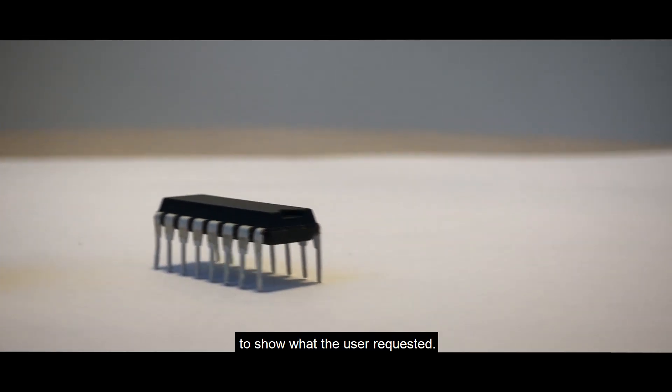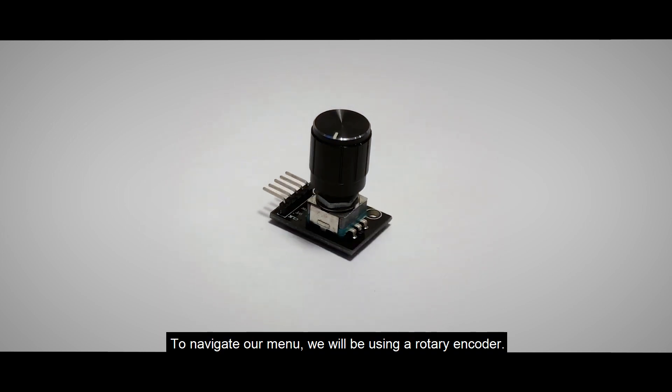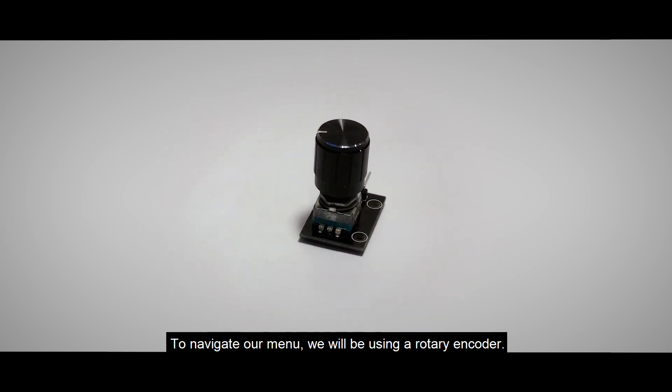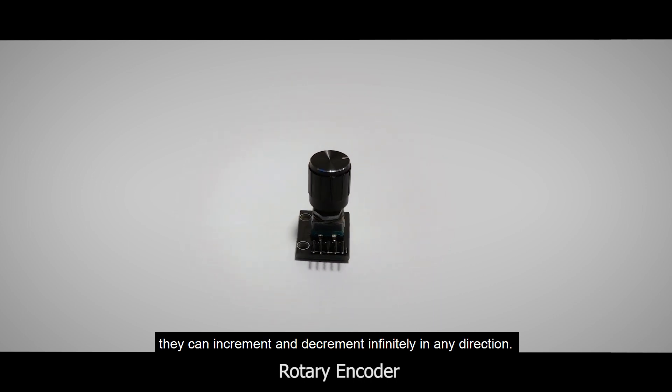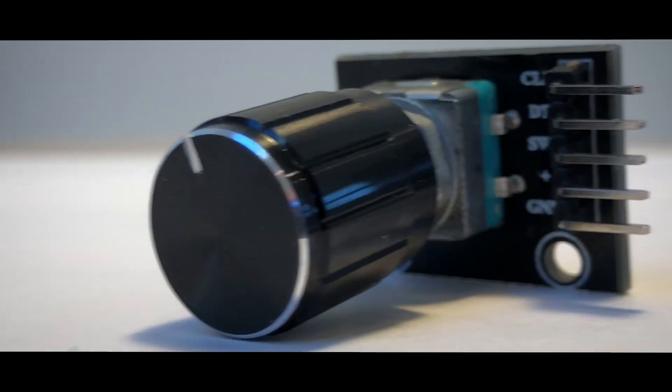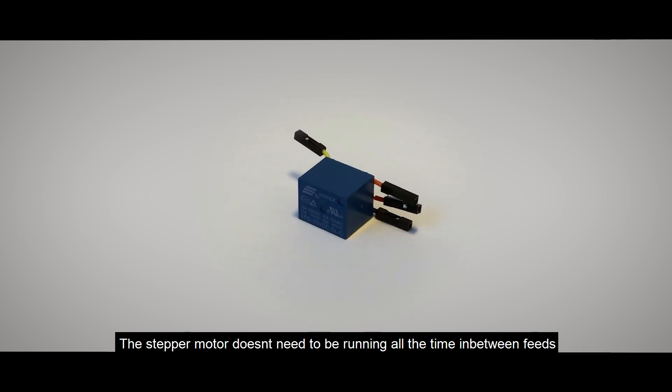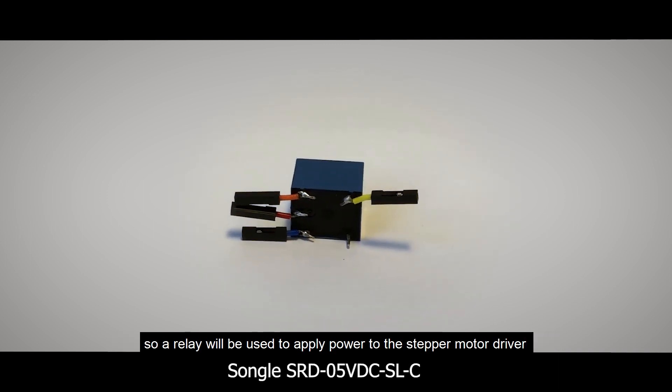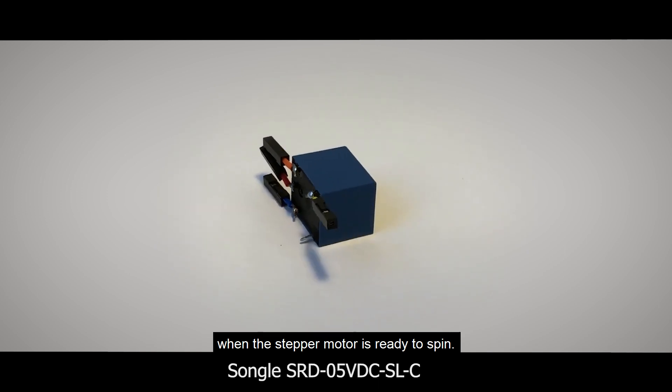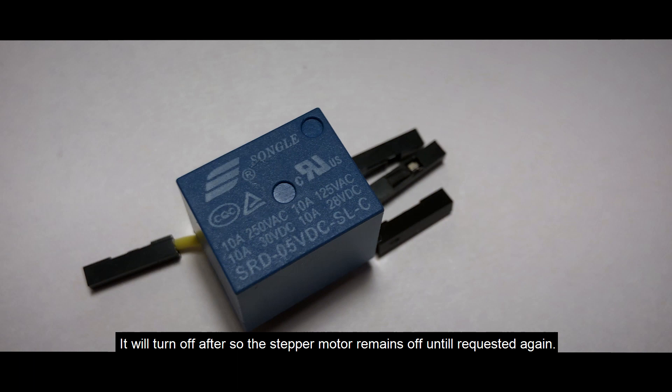To navigate our menu, we will be using a rotary encoder. Rotary encoders are cool because unlike a potentiometer, they can increment and decrement infinitely in any direction. The stepper motor doesn't need to be running all the time in between feeds, so a relay will be used to apply power to the stepper motor driver when the stepper motor is ready to spin. It will turn off after, so the stepper motor remains off until requested again.